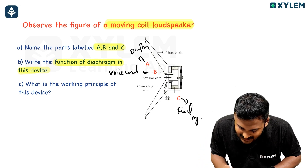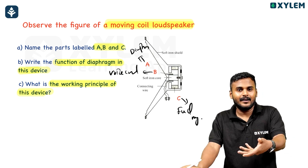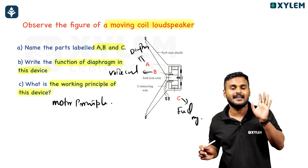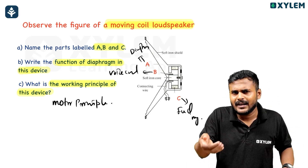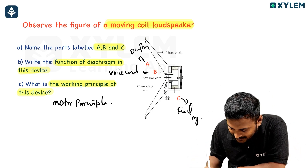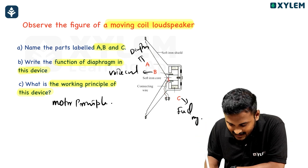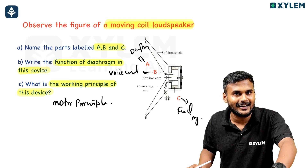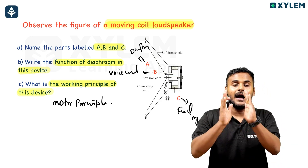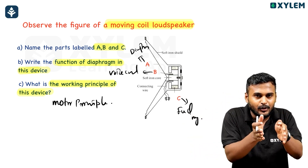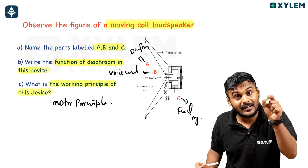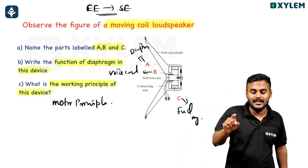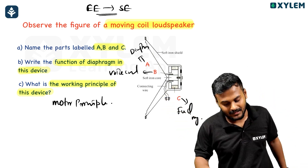What is the working principle of this device? The working principle is the motor principle. Motor principle — a current-carrying conductor placed in a magnetic field experiences a force. An electrical signal, that is a current supply, goes to the voice coil. The current-carrying voice coil placed in the magnetic field experiences a force. Electrical energy is transformed to sound energy.